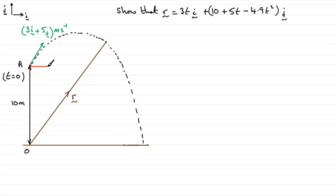it was initially projected horizontally with a velocity of 3 meters per second. Vertically it's got a component initially of 5 meters per second.